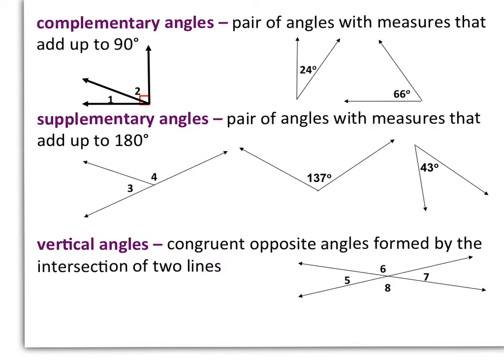Supplementary angles are a pair of angles with measures that add up to 180 degrees. So their measures will add up to make a straight line. We see that in the example on the left with angle 3 and angle 4.